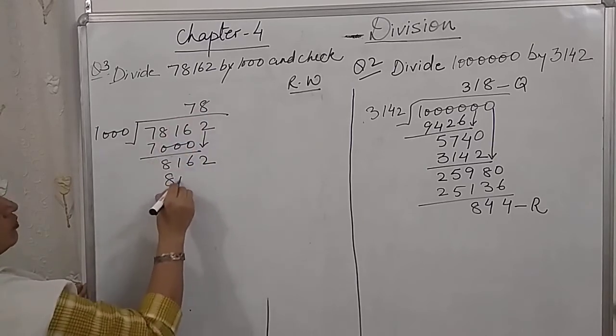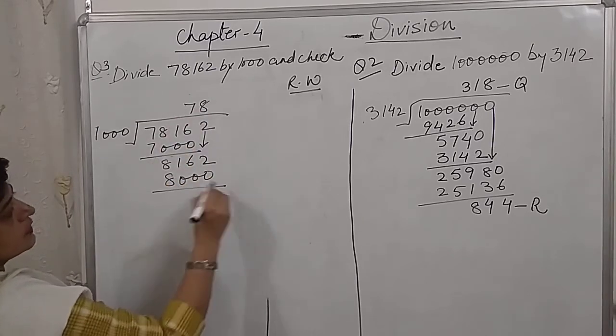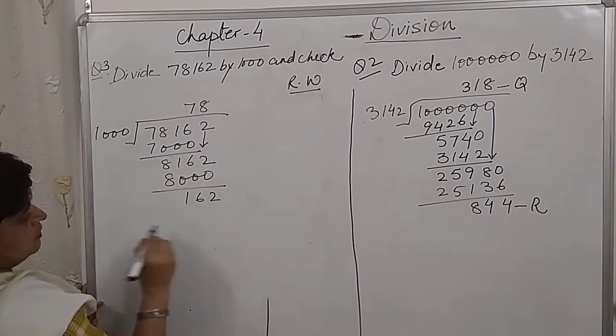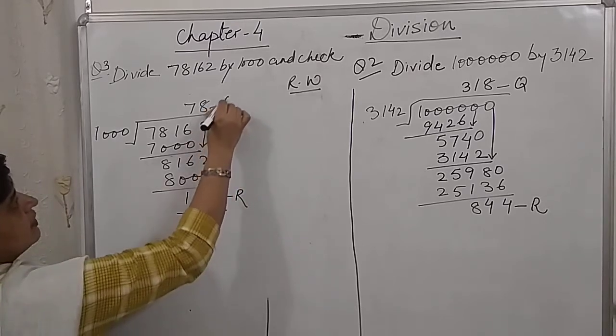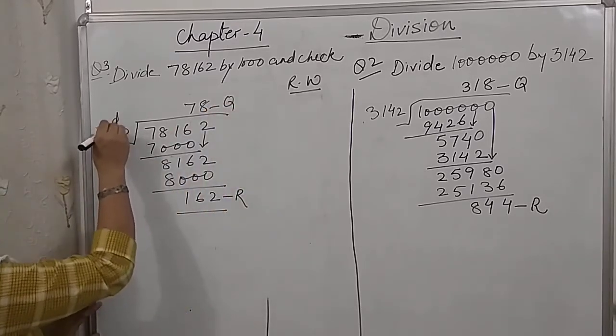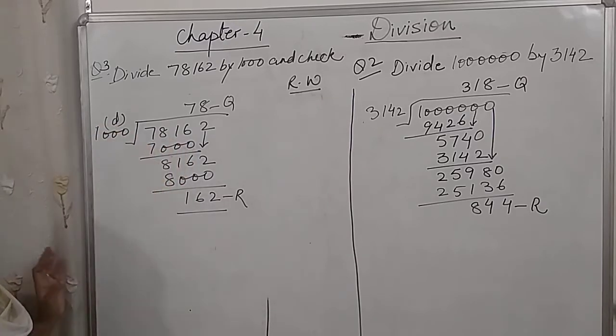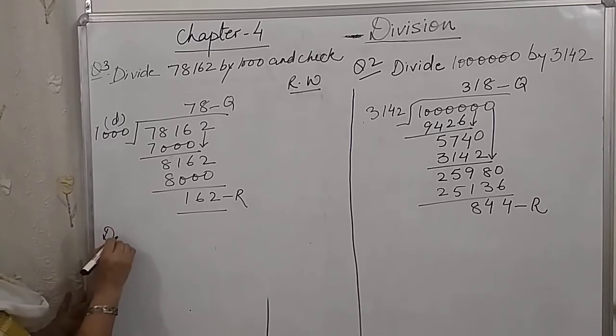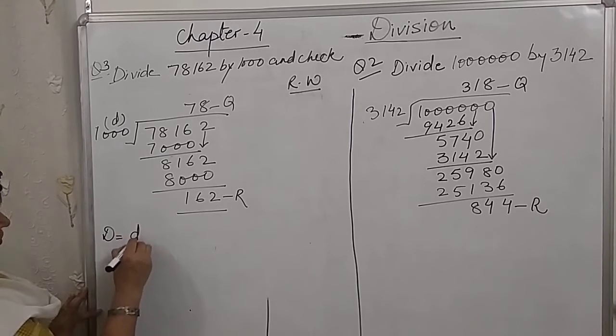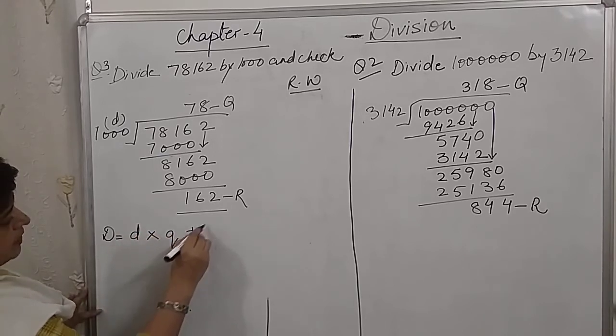8's are 8000. So, this is our remainder, this is our quotient, this is the divisor and this is the dividend. So, to check or verify, we need to put the digits in the following equation.